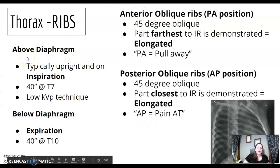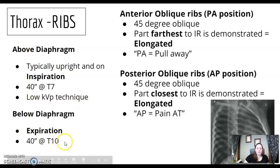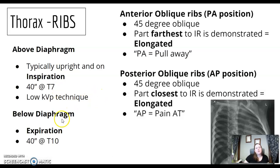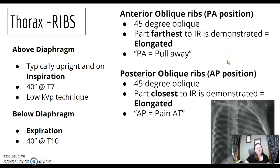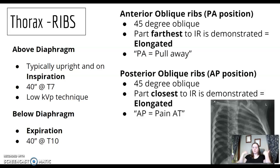For ribs, your textbook separates upper ribs versus lower ribs. Upper ribs is centered at T7 with inspiration. Lower ribs is centered at T10 with expiration. Rib obliques for textbook is only elongated. When you're in a PA oblique, to elongate the side of interest, pull it away. When you're in a posterior oblique, to elongate the side of interest, rotate towards.